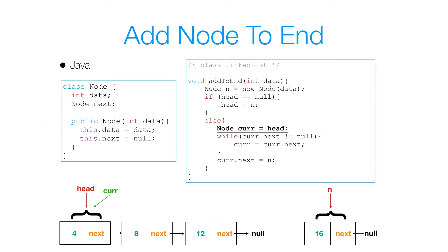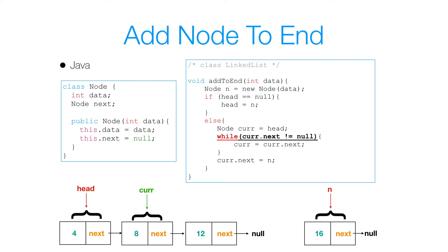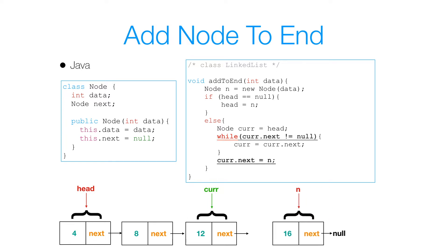Now suppose I wanted to add a node to the end of my list but I did have some nodes already. I have cur reference the same object my head references, and in my while loop I check the condition that cur.next is not equal to null. At the point where cur.next is equal to null, I know I've reached the last node. I then set that node's next to reference the new node n I want to add. I loop: cur.next is not null, so cur equals cur.next. Again cur.next is not null, so cur equals cur.next. Finally, cur.next is null, so I set cur.next to reference n. That's how I add a node to the end of a list.